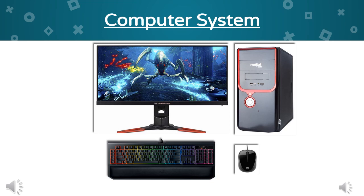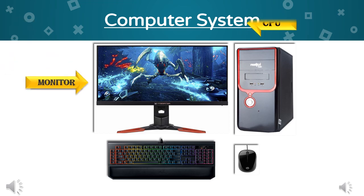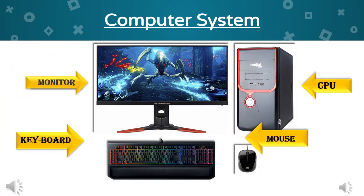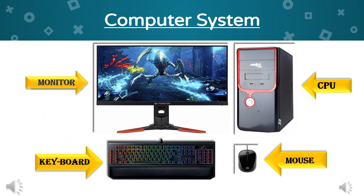A computer is a machine that has four main parts: Monitor, CPU, Keyboard and Mouse. Let us learn about these parts one by one.